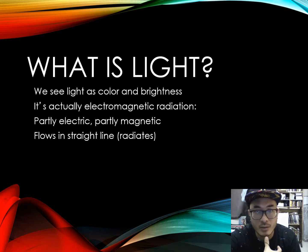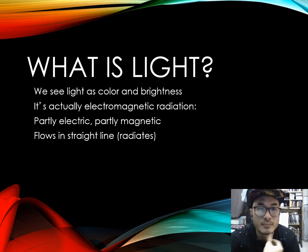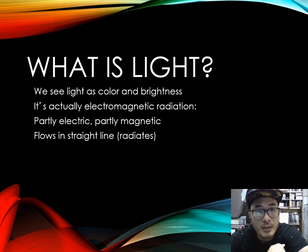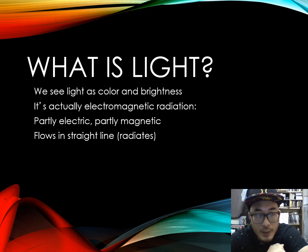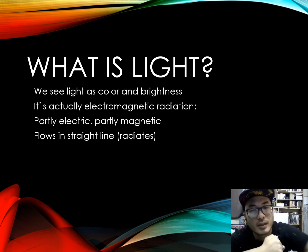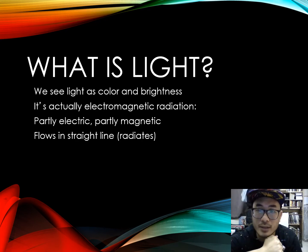What is light? We all see light as colour and brightness. It is actually electromagnetic radiation, partly electric and partly magnetic, that flows in a straight line and also radiates.